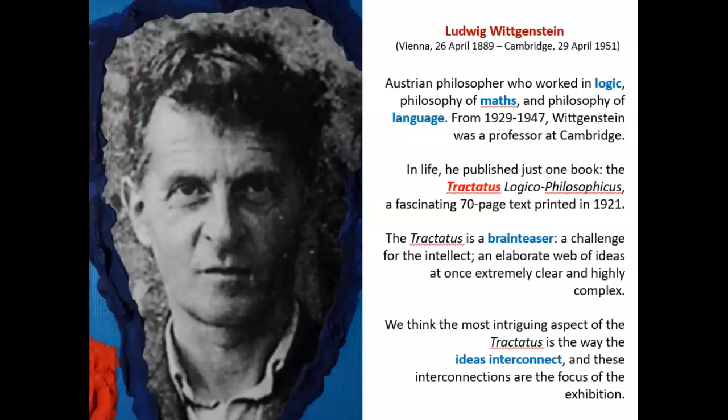So who was Ludwig Wittgenstein? He was born in Vienna in 1889 and died in Cambridge in 1951, and is definitely one of the most important philosophers of the last century. He was specifically working in the fields of logic, philosophy of mathematics, and philosophy of language. Between 1929 and 1947, he worked at the University of Cambridge, very closely with philosopher Bertrand Russell.